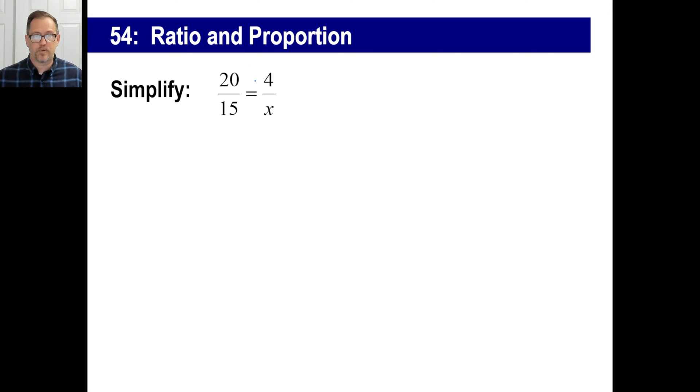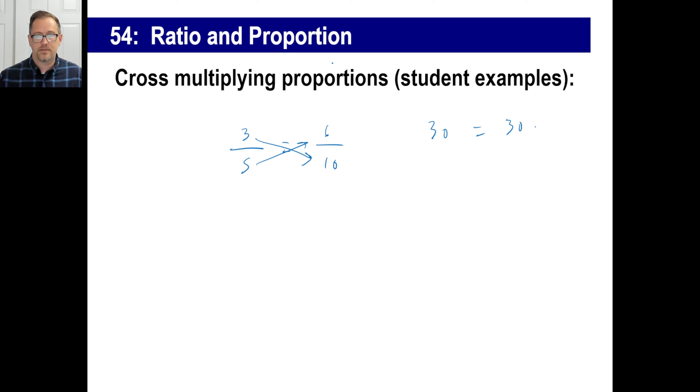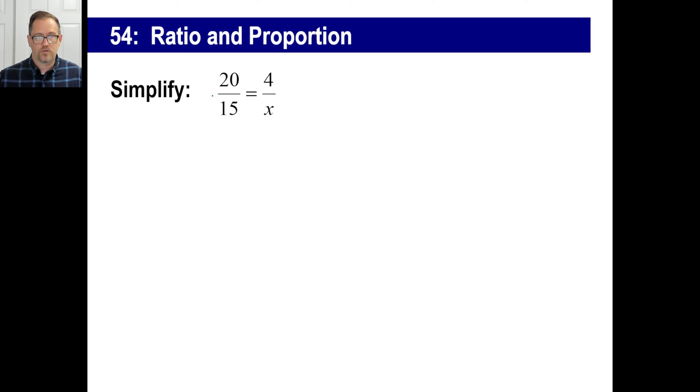Now, we know that if we have a proportion, if we multiply this top left by the bottom right, that's equal to the bottom left times the top right. Correct? So 20 times x is what we're going to do. In other words, just like we did this, the top left times the bottom right equals the bottom left times the top right. We're going to do the same thing here. So 20 times x, which is 20x, equals 15 times 4, which is 60.